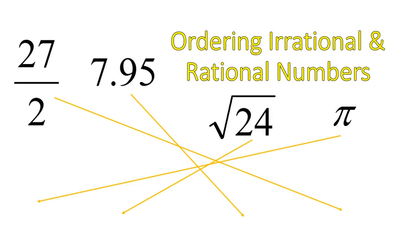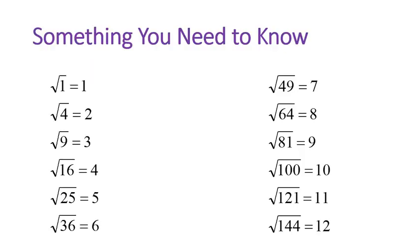Hello, this is Mr. Buffington, and in this lesson we will be ordering irrational and rational numbers, taking a list of numbers in all sorts of forms and putting them in order from least to greatest. Let's go ahead and take a look at a couple of pieces of things that we will need to know before we can do this.